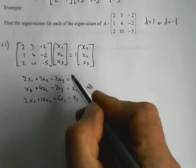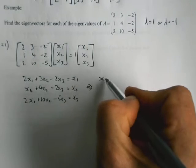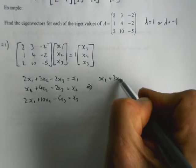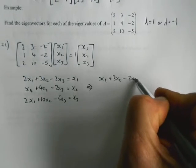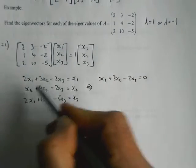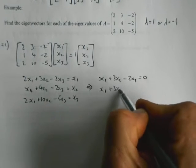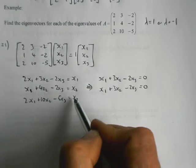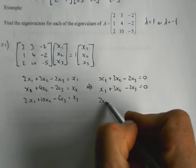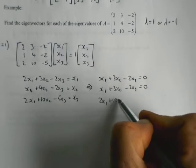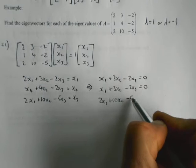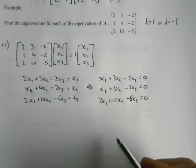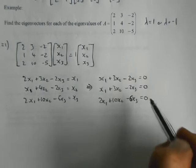And you can proceed anywhere you like from here, but often it's a good idea just to make them all equal to 0. So let's stick that x1 over that side. So you get x1 plus 3x2 minus 2x3 equals 0. And put the x2 over that side, we get x1 plus 3x2 minus 2x3 equals 0. And put the x3 over that side, so we get 2x1 plus 10x2 minus 6x3 equals 0.